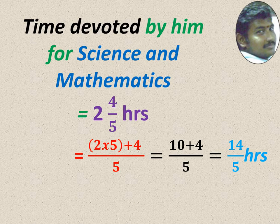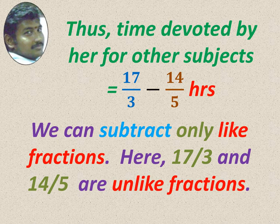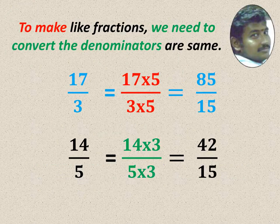So we converted mixed fraction to improper fractions. Now we can check. Total is 17 by 3 hours spent for studying. In that, 14 by 5 is spent for maths and science. Remaining subject, how much is spending, that we have to find. When we subtract, we can subtract only like fractions, not unlike fractions. These two are unlike. 17 by 3 and 14 by 5 are unlike. So convert into like.